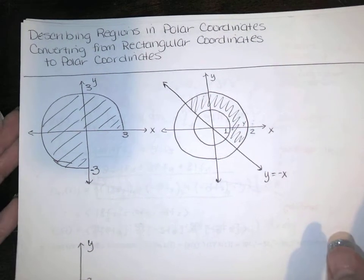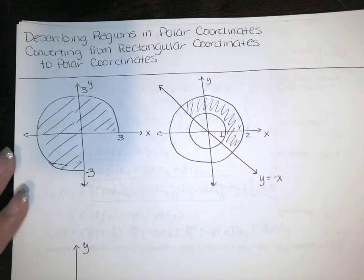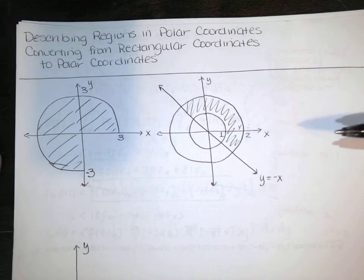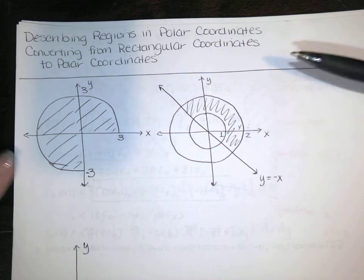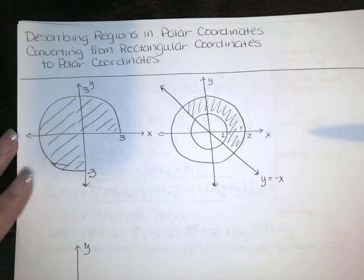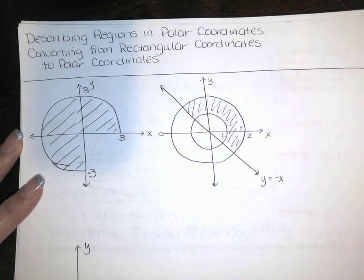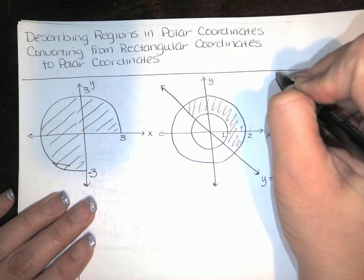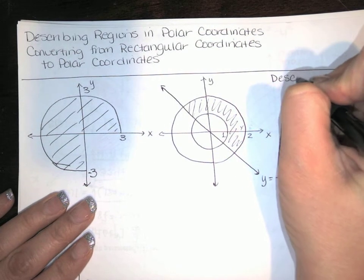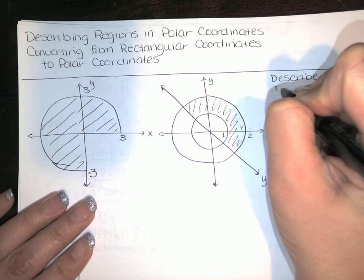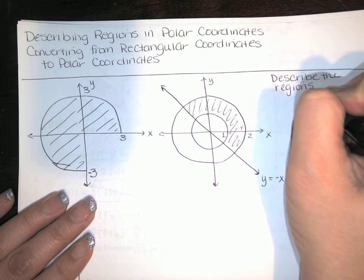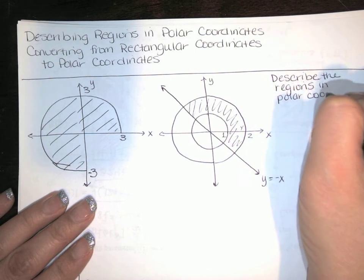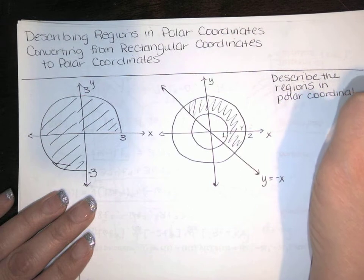In this video we describe regions in polar coordinates and also convert from rectangular coordinates to polar coordinates. We've got double integrals and we want to write them in the new coordinate system. Here are a few regions and the problem asks us to describe the regions in polar coordinates rather than using rectangular coordinates.